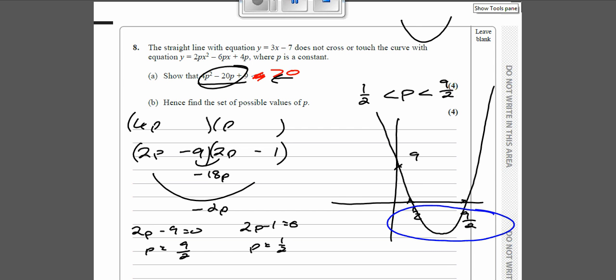Sometimes if it said it is greater than 0, then there's two parts of the graph which are greater than 0, which is this bit here and this bit here, so then you need to have two inequalities. But with this question, there's only one bit of the graph which is less than 0.